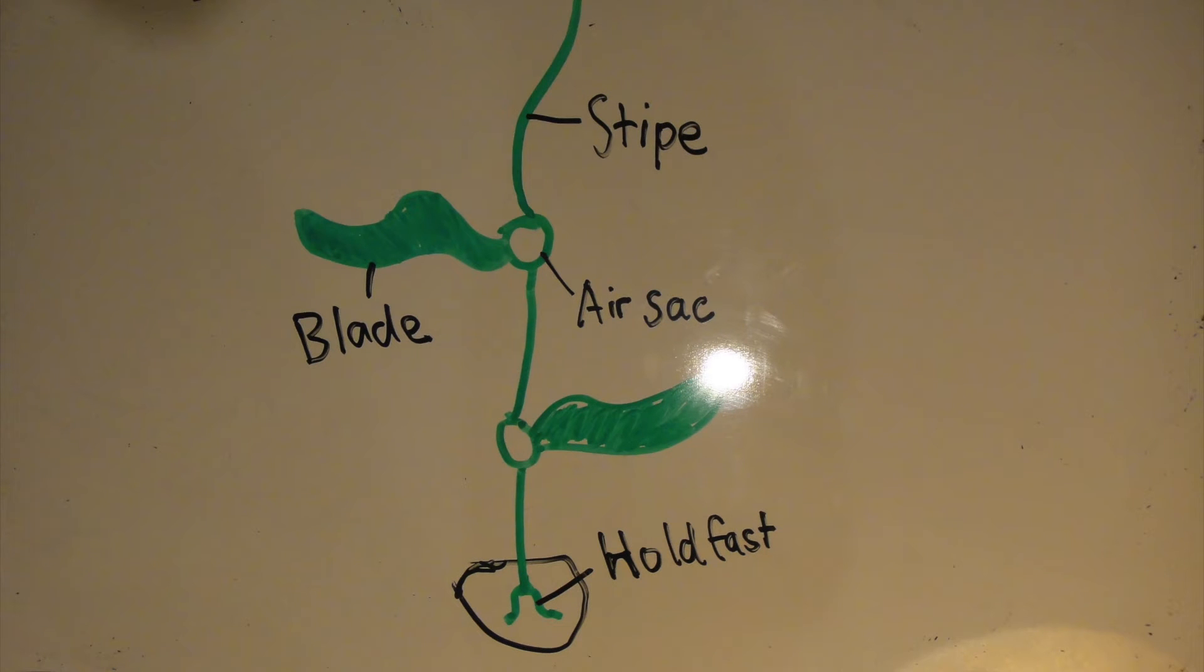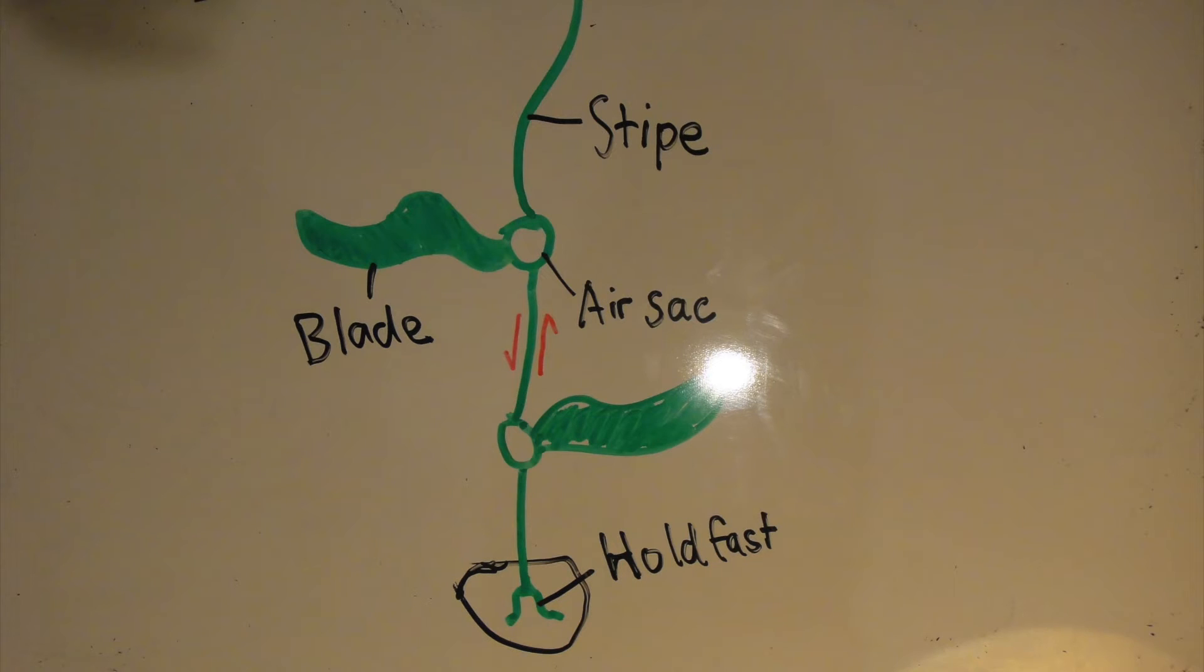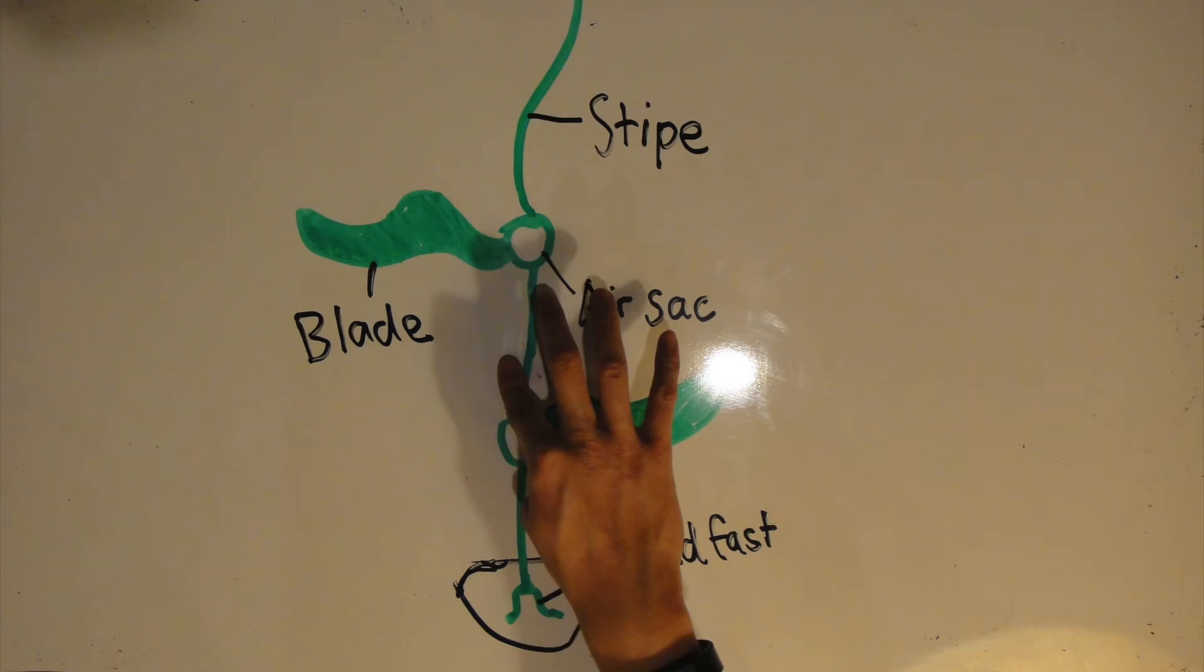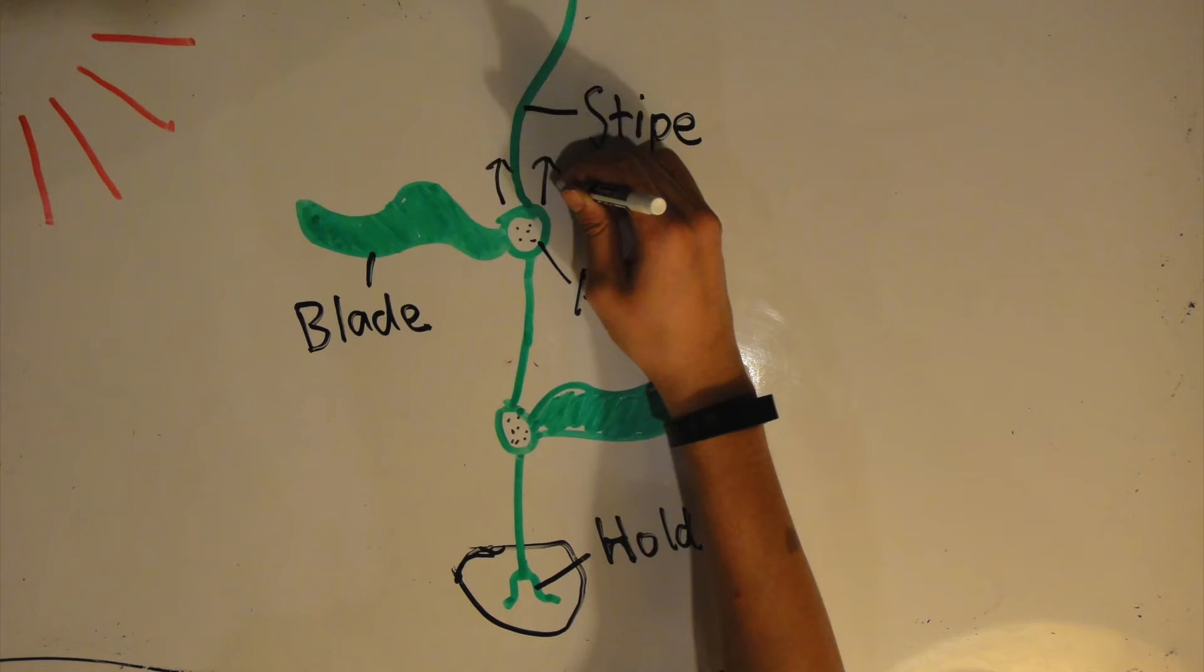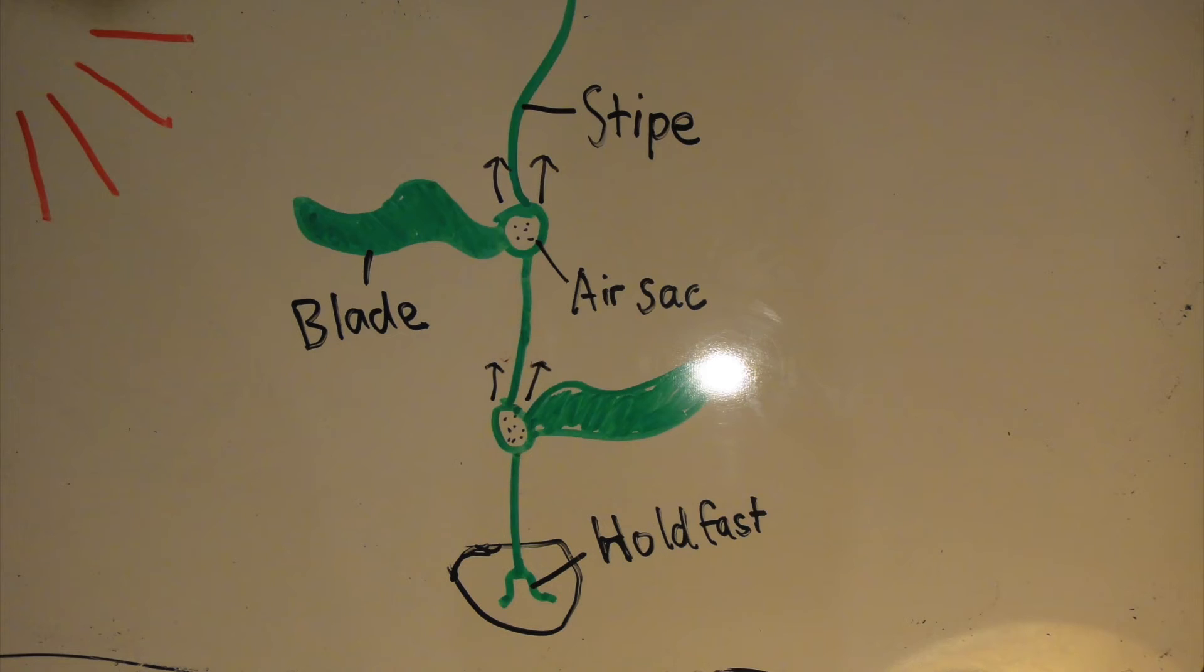The stipe works similar to the stem of a plant, transporting materials and providing structure. The blade acts similar to plant leaves, increasing the surface area for chlorophyll to absorb more light. The air sac contains not-so-dense gas to act like a buoy and lift the whole organism. This allows the kelp to keep itself upright and pull itself closer to the sun.